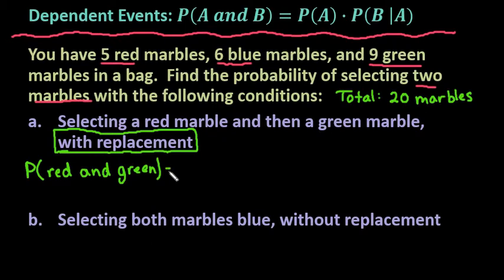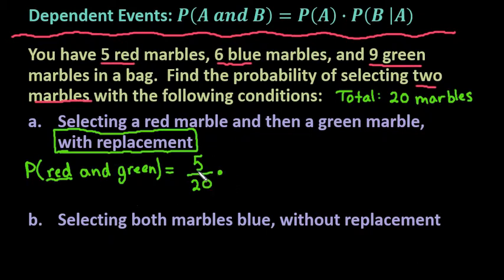With replacement means that we're going to look at the marble and then put it back into the bag, shake it up, and then select a different marble. So the probability of selecting a red one — we know there are 5 out of 20 in the bag that are red. I looked at the first marble, saw it was red, put it back in the bag, shook it up, and selected a second marble. So I still have 20 marbles in the bag, and the probability of selecting a green one is 9 out of 20.